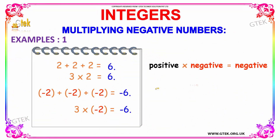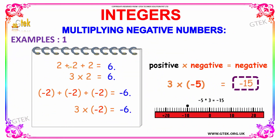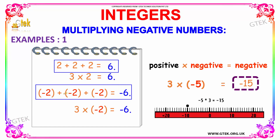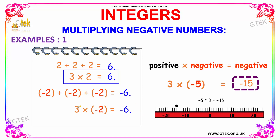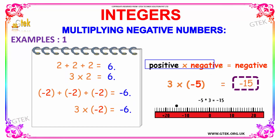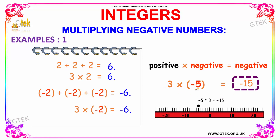Next we are going to see an interesting example. If you add two plus two plus two, you get positive six. Whereas if two is negative, then minus two plus minus two plus minus two will give you minus six — exactly the negative of the answer. Similarly, three times two gives you six, and if two is negative, that gives you minus six. This is based on the fact that positive times negative gives a negative answer. So three multiplied by minus five gives you minus fifteen.